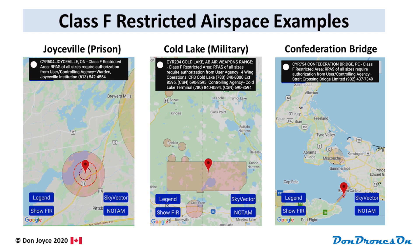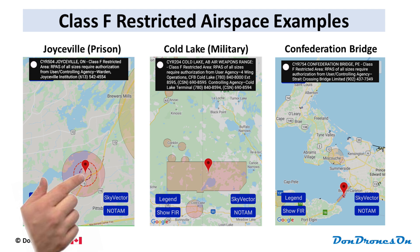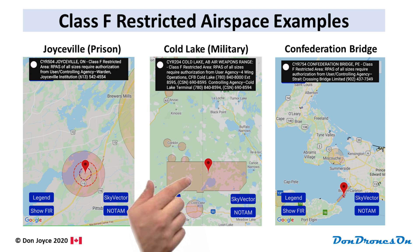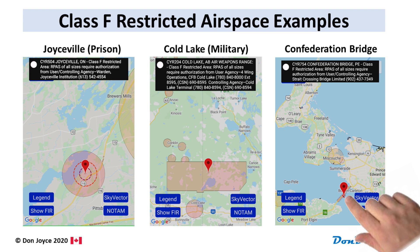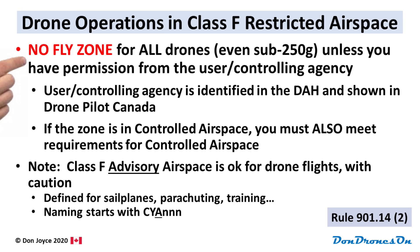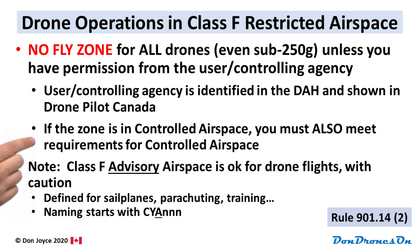Here are three interesting examples: the Joyceville Prison near Kingston, Ontario; the huge Cold Lake weapons range in Northern Alberta; and the Confederation Bridge linking New Brunswick and Prince Edward Island. Class F restricted zones come in all shapes and sizes. Drone flights in any of these Class F restricted zones are prohibited — even for sub-250 gram drones — unless you have permission from the user or controlling agency listed in the DAH. If the zone is inside controlled airspace, you also need to meet those requirements. Class F advisory airspace is okay for drone flights as long as you fly with extreme caution.